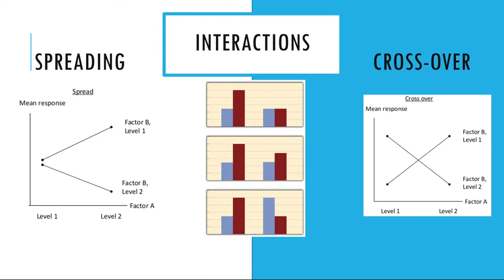Types of interactions. The effect of one independent variable can depend on the level of the other in several different ways. First, there can be spreading interactions, shown in the top two panels of Figure 9.4. Independent variable B has an effect at level 1 of independent variable A — there's a difference in height of the blue and red bars on the left side of the graph — but there was no effect at level 2 of independent variable A. This is much like the study of Schnall and colleagues, where there was an effect of disgust for those high in private body consciousness, but not for those low in private body consciousness.